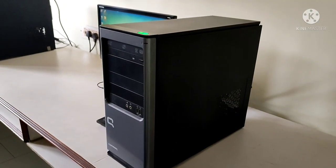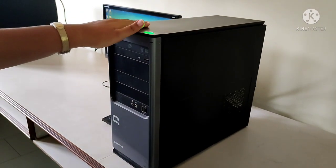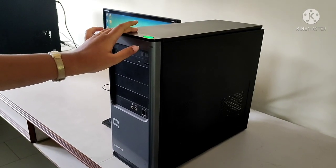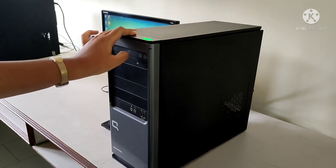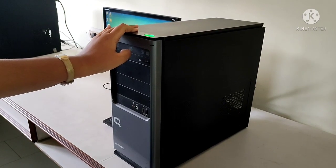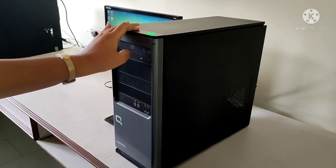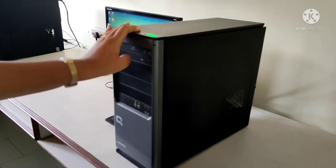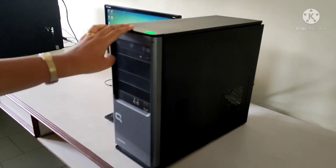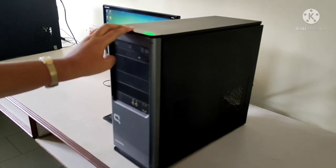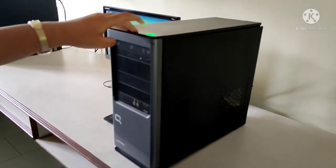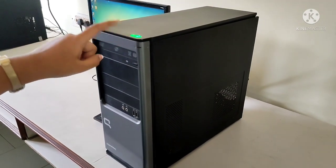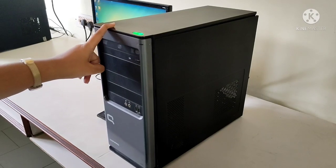And then, the next part children. See this box children? This is a CPU. Do you know the full form of a CPU children? The full form of the CPU is Central Processing Unit. What is it children? Central Processing Unit. See this green button children? This is the power button of the CPU.